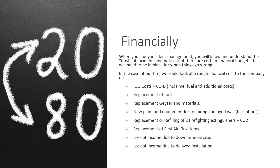Let us now look at the financial aspect. We understand that there are costs to incidents and accidents, and certain financial budgets may need to be put in place when things go wrong. In the case of the fire mentioned earlier, costs to the company may include: incident on duty costs including time, fuel expenses, and additional costs to claim for compensation; the replacement of damaged tools; the cost to replace damaged geysers or materials; purchasing new paint and equipment for repairing the damaged wall including labor costs; the replacement and refilling of the two fire extinguishers used; replacement of first aid box items used; the loss of income due to downtime; as well as the loss of income due to delayed installations.